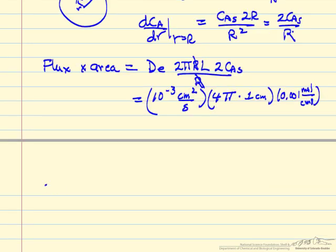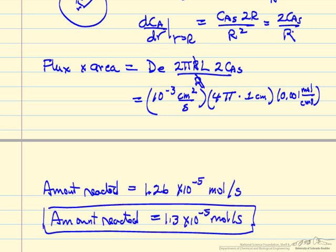The amount reacted in 1cm equals 1.26 × 10⁻⁵ mol/s. Rounded to significant figures, that's 1.3 × 10⁻⁵ mol/s. Checking units: the centimeters cubed on top and bottom cancel, leaving moles per second.